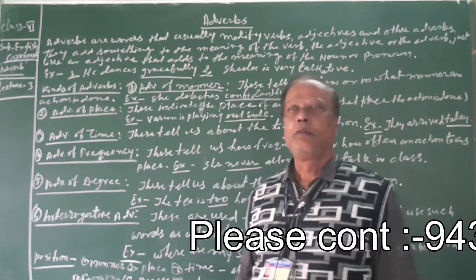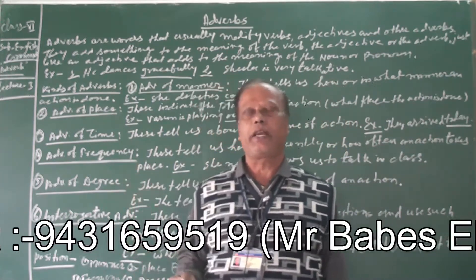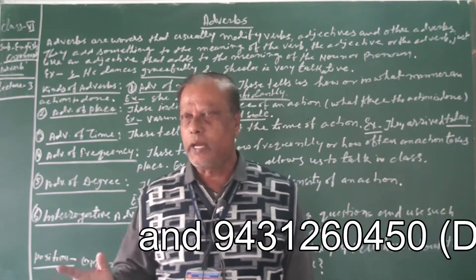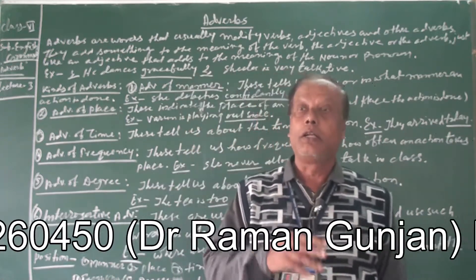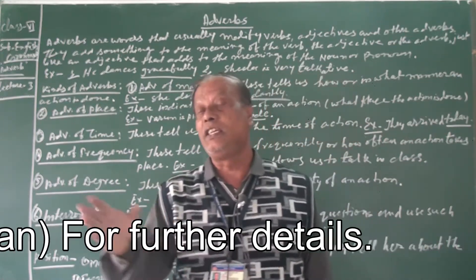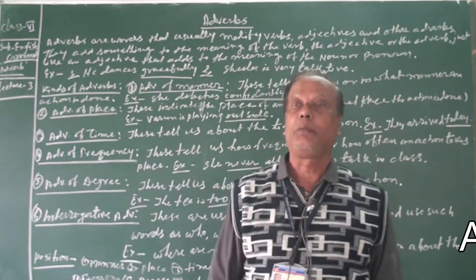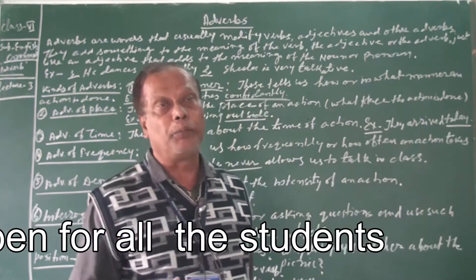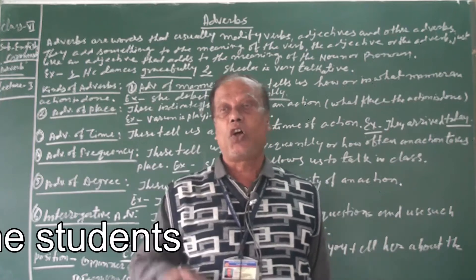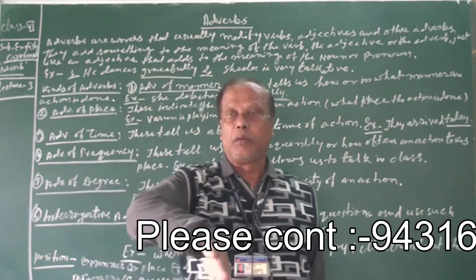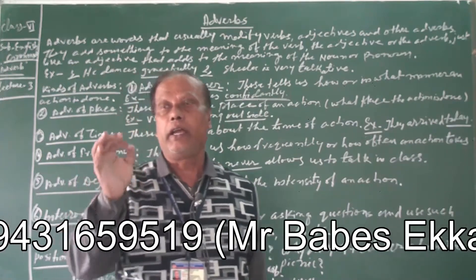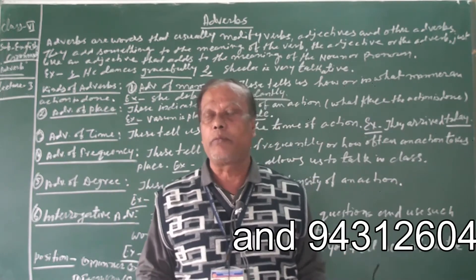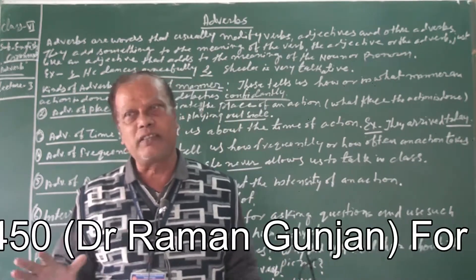So remember four things: Point 1 — verb. Point 2 — adjective. Point 3 — another adverb. Point 4 — complete sentence. An adverb is the word that can modify any of these four: a verb, an adjective, another adverb, or a complete sentence. I hope you understand what an adverb is and what it does.